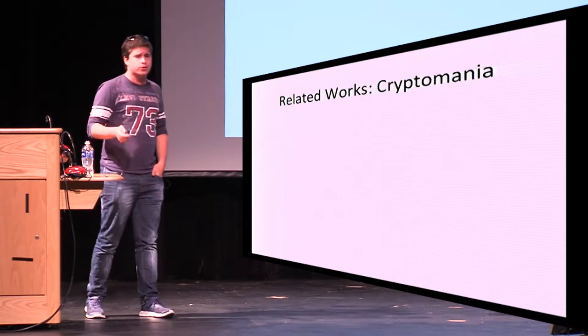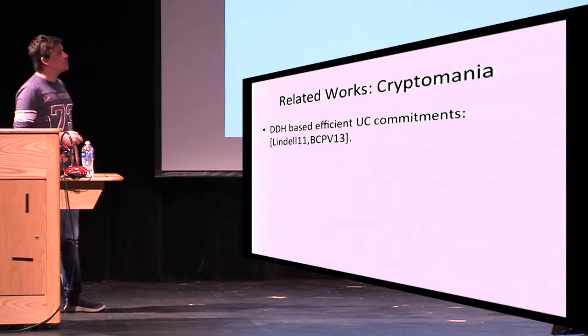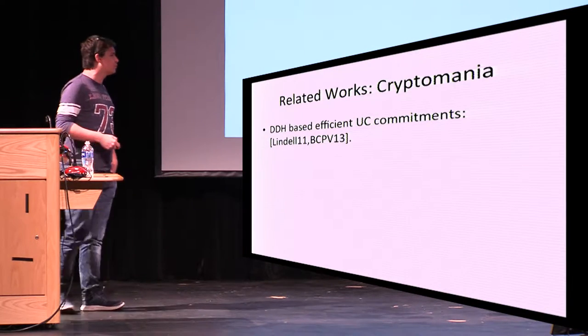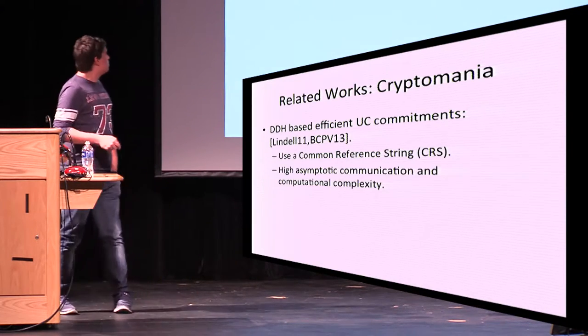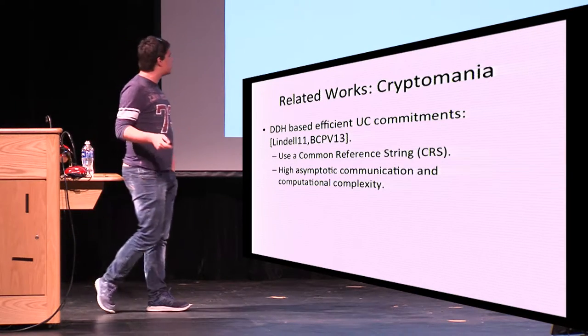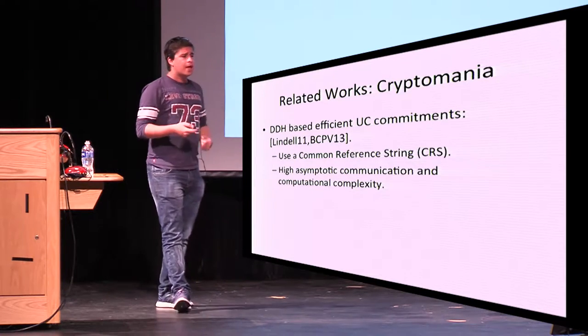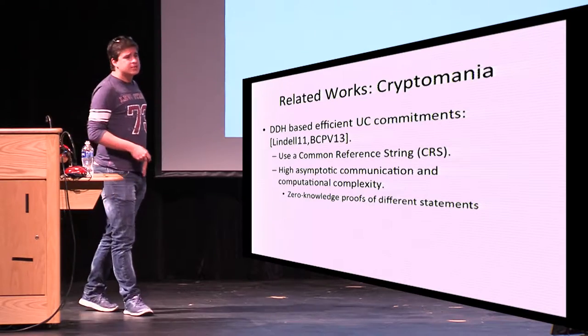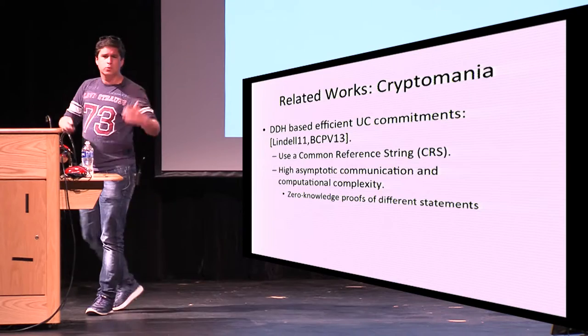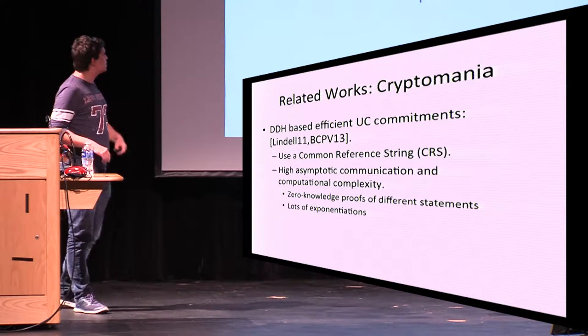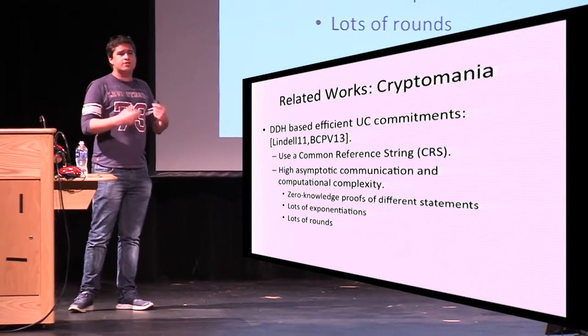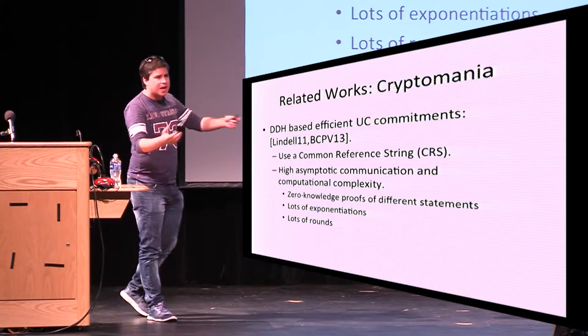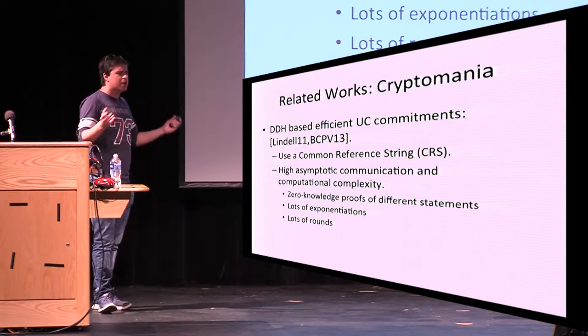Now, I'll start with related works pre-2014. What did we have in terms of UC commitments? We had this work by Yehuda, Lindell at first, and then an improvement on that by Blazy and others, where they build efficient UC commitments from DDH. They use a common reference string as a setup assumption, but there are some problems. They have high asymptotic communication and computational complexity. Why? Because they need to keep doing a lot of modular exponentiation for every message they commit to. They need zero-knowledge proofs, which require several rounds, unless you're willing to use a random oracle, which we're not dealing with here. So you need several rounds for proving the statement. They have lots of exponentiations, and they have lots of rounds that are consequently implied by the zero-knowledge protocols. So we want to get rid of all that. We don't want the high complexity, both computation and communication, and we don't want this huge round complexity.